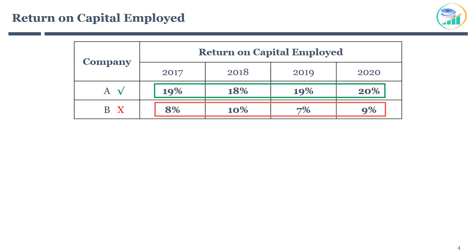The acceptable range of ROCE can differ across industries. For example, utility and oil and gas companies will have low ROCE, where 8–10% can be considered a sign of an efficient company. However, software companies typically have high ROCE, and you should consider a ROCE of 15% or more before investing.